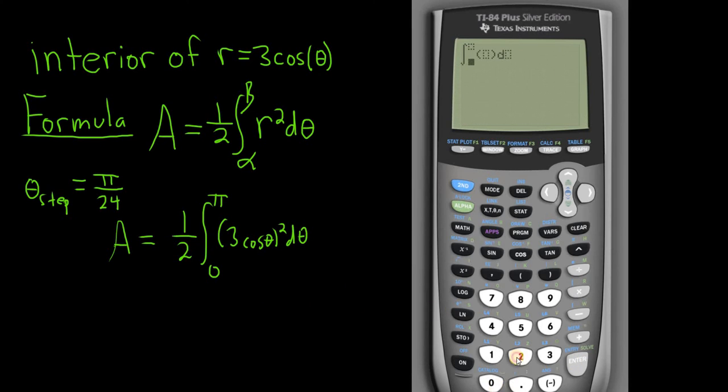And just type in the numbers, right? So 0. Hit the up arrow key. Pi. Go over here. Parentheses. 3. Cosine. Your variable. Parentheses. Parentheses.